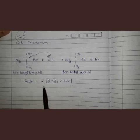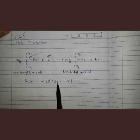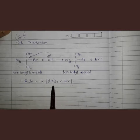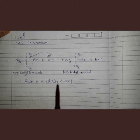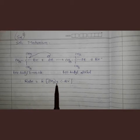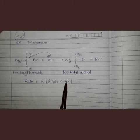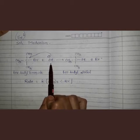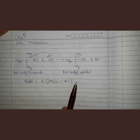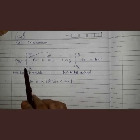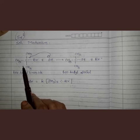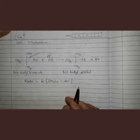The rate of this reaction is given by k multiplied by [(CH₃)₃CBr], meaning the rate depends upon only tertiary butyl bromide. It does not depend upon the concentration of the nucleophile. That means the rate of this reaction depends upon only one reactant — only one substrate — and that is why the reaction is called SN1.